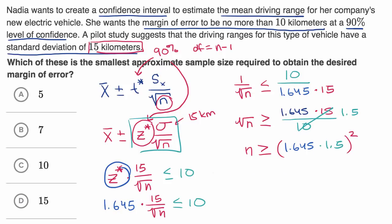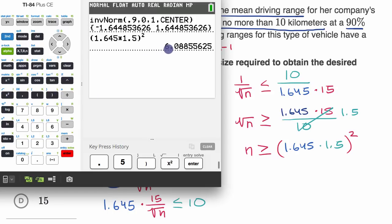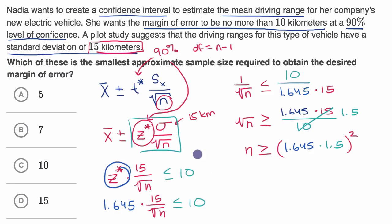And so let's get our calculator back. We are going to have 1.645 times 1.5, and then we want to square it. And we get approximately 6.09. So n has to be greater than or equal to 6.09.